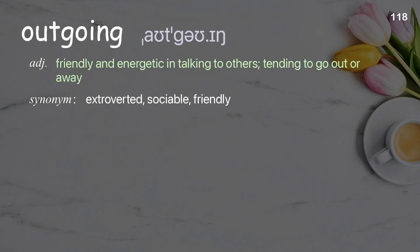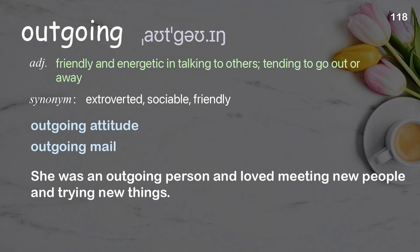Outgoing: Friendly and energetic in talking to others; tending to go out or away. Examples: Outgoing attitude. Outgoing male. She was an outgoing person and loved meeting new people and trying new things.